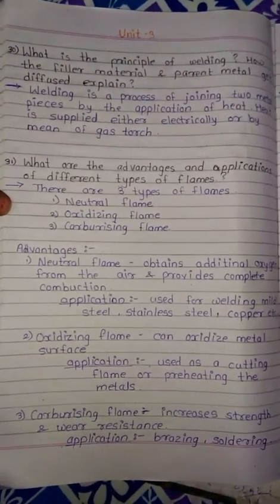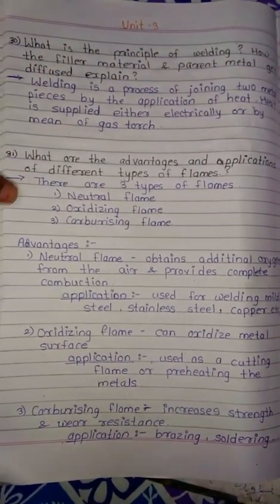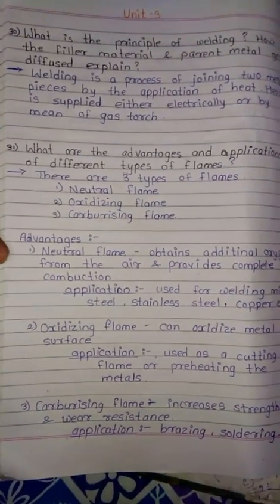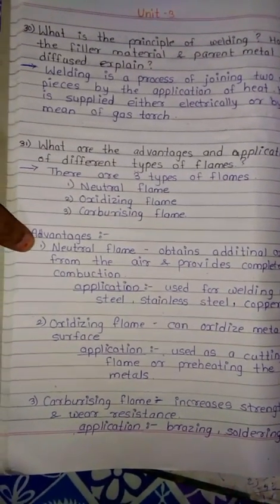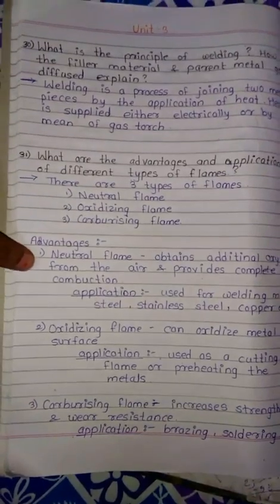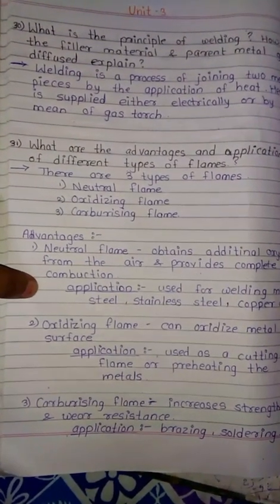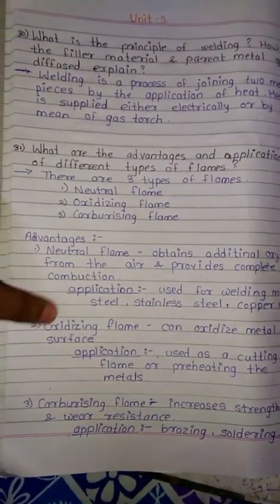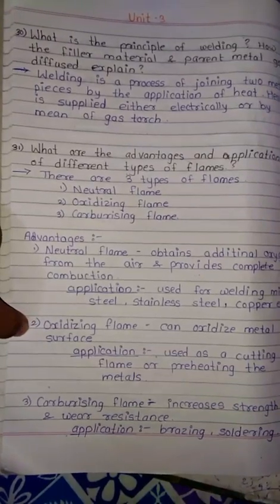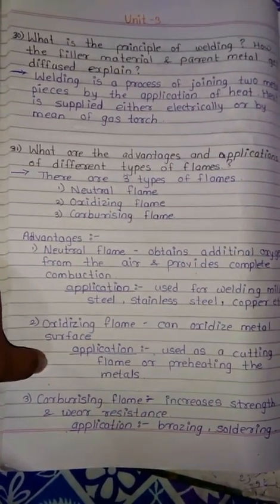Question 31: What are the advantages and applications of different types of flames? There are three types of flames — neutral, oxidizing, and carburizing. For each type, the first point is the advantage and the second point is the application.